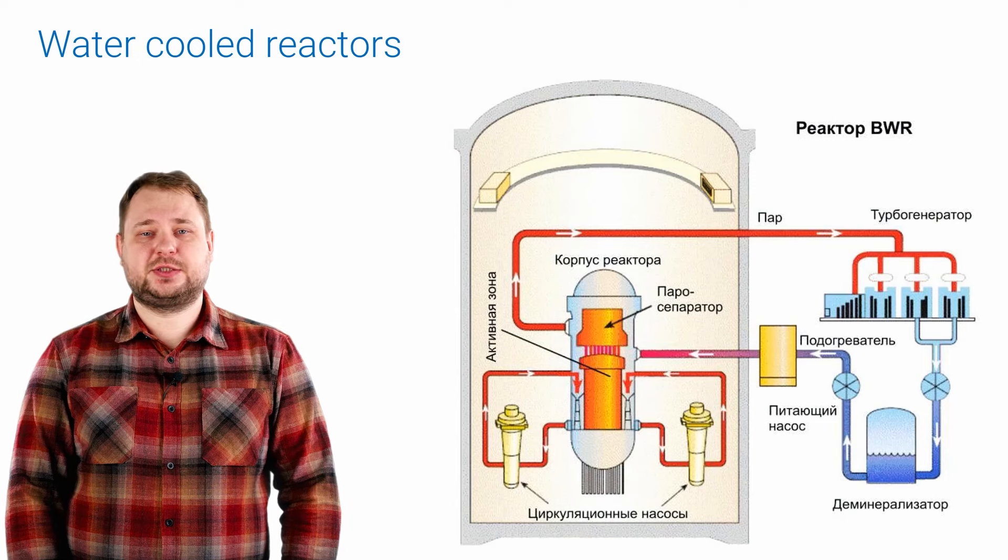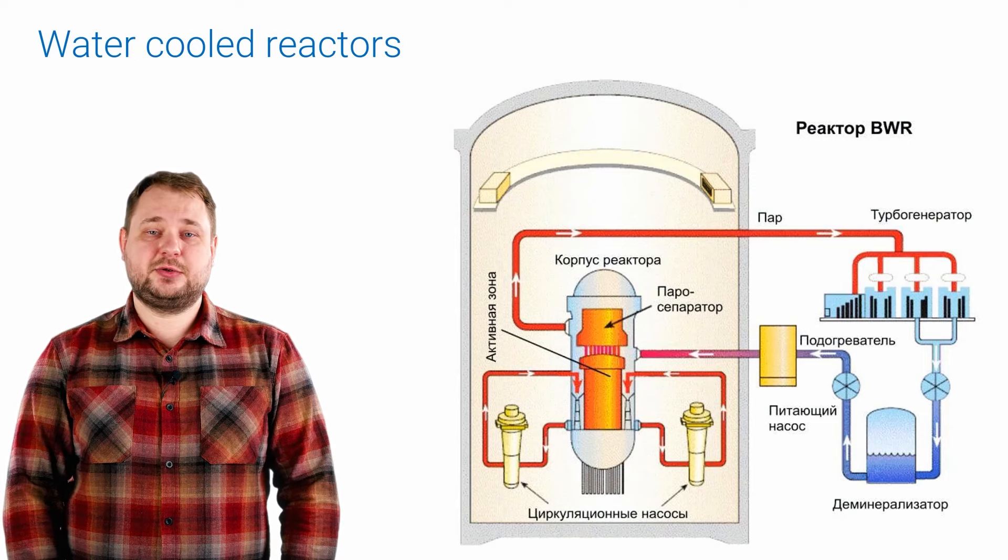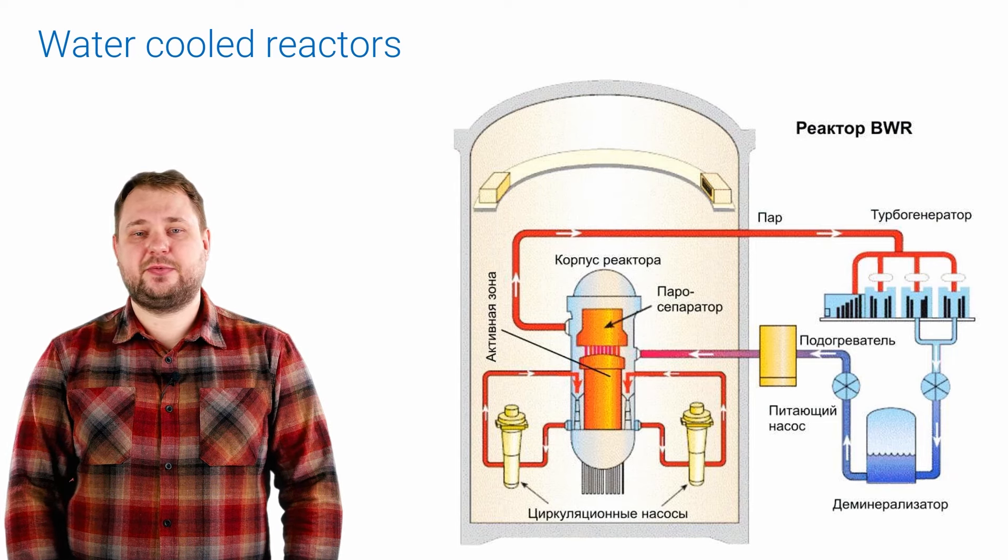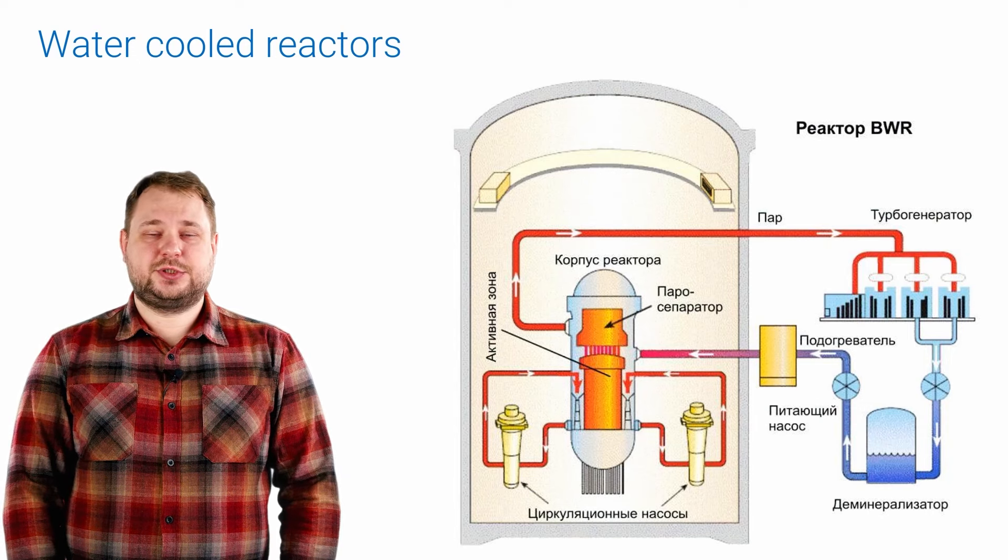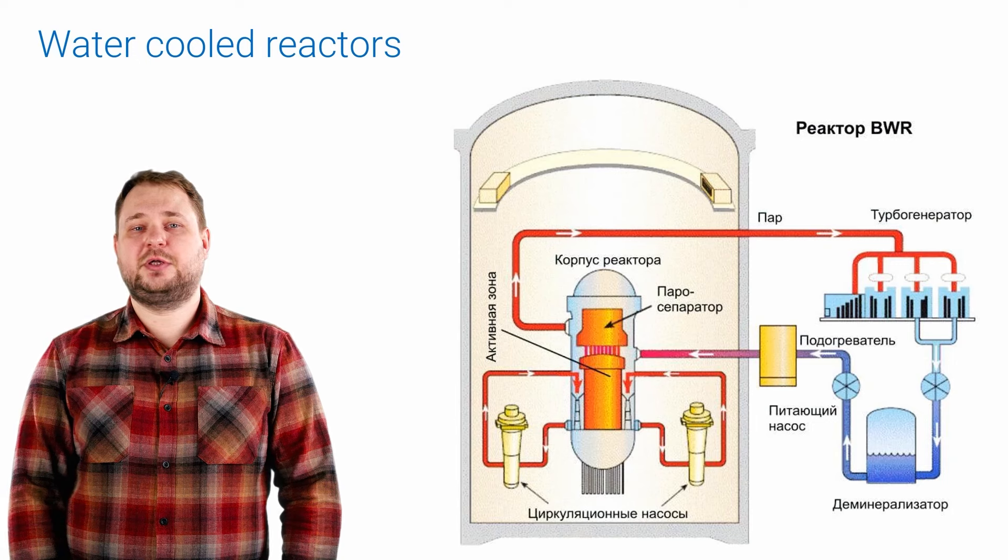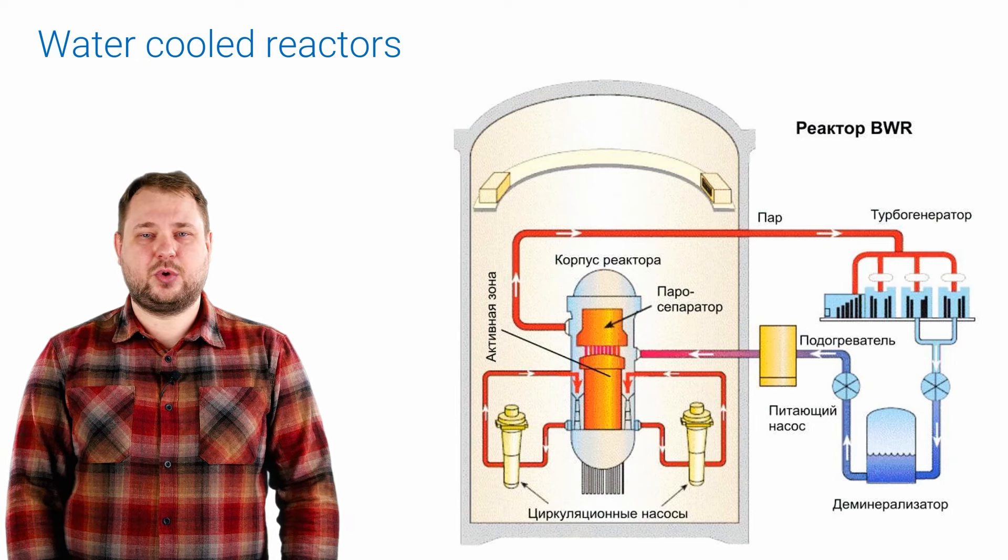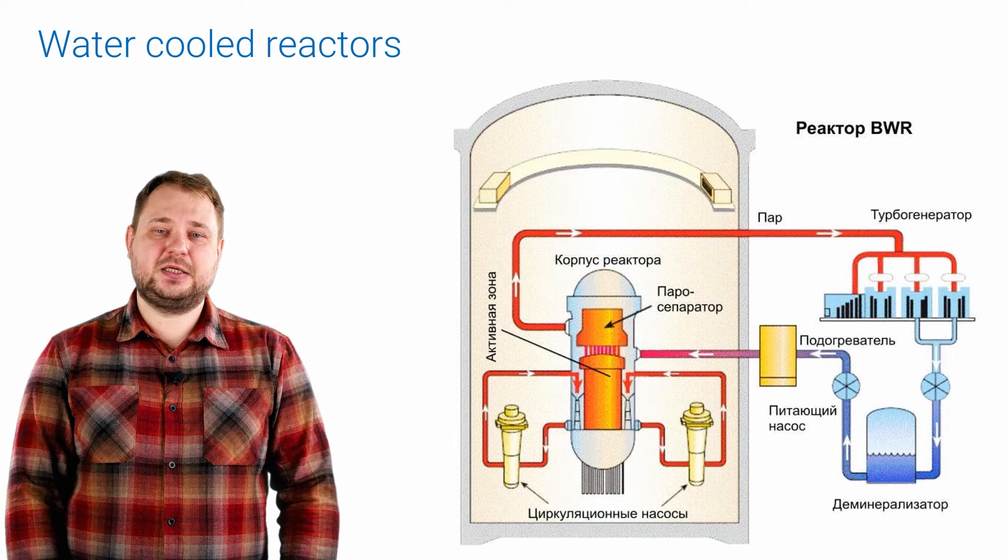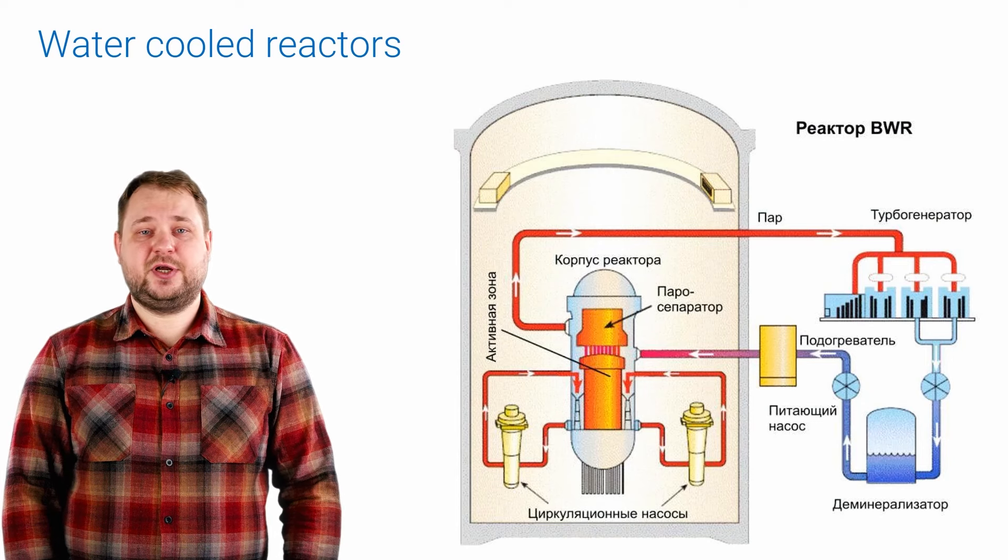BWR, Boiling Water Reactor. The operating principle of a nuclear power plant using such a reactor is very similar to how a nuclear power plant operating with VVER operates. A boiling water reactor also uses ordinary water. Its only feature is the steam is generated immediately in the core. In a water-water reactor, water is first heated, which is later, after several stages, converted into steam.